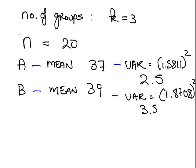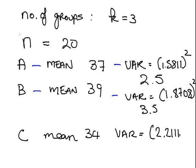Finally, C, the mean is 34, the variance is 2.2111 squared and that is 4.888.